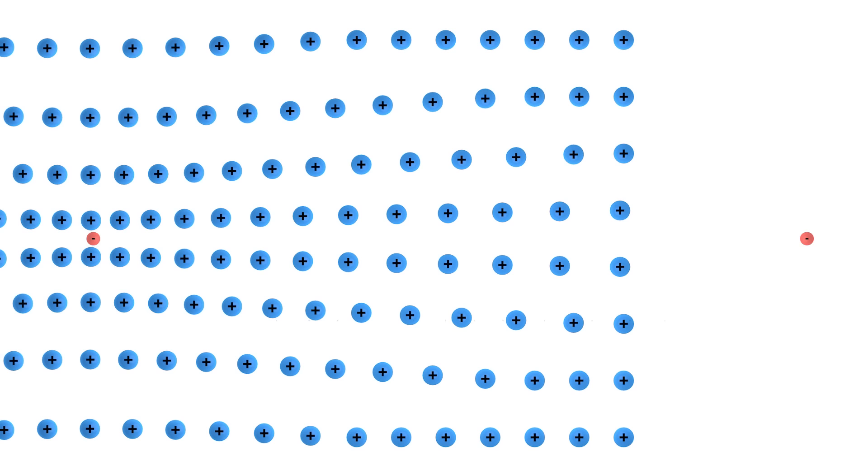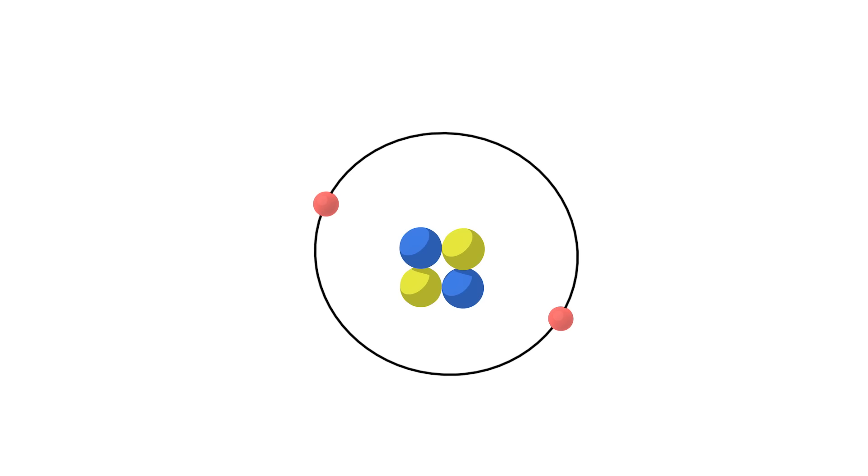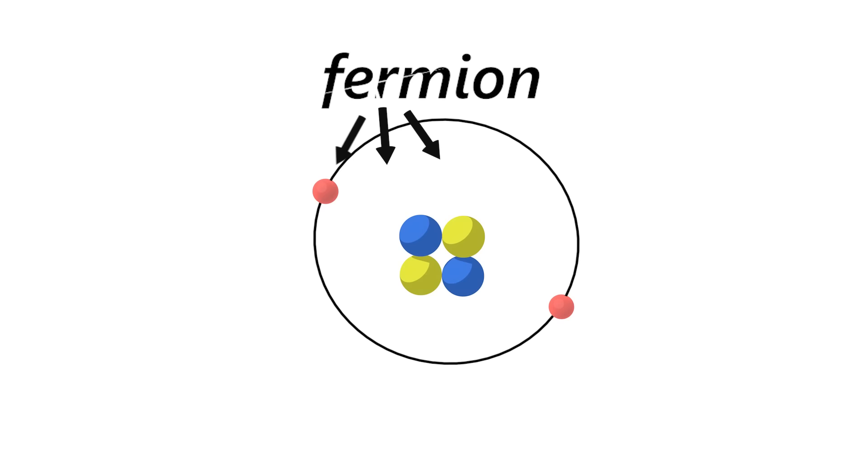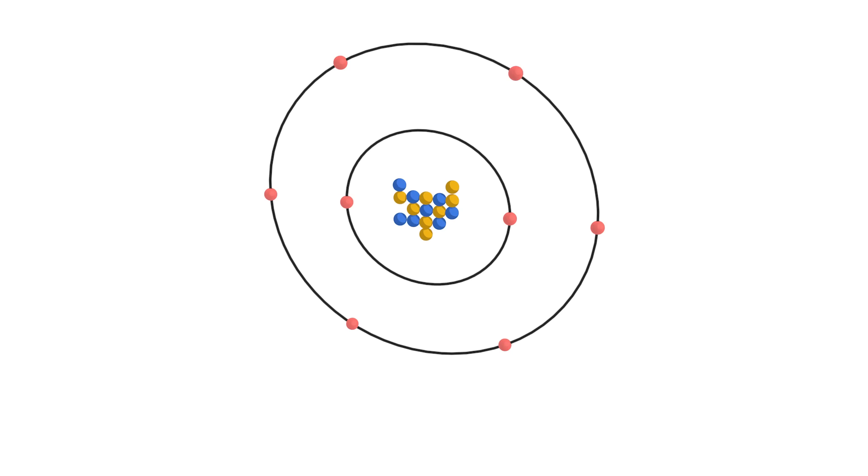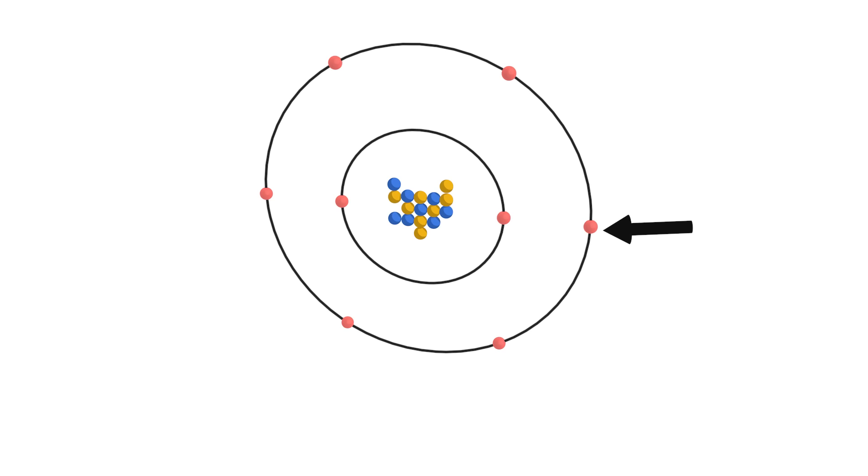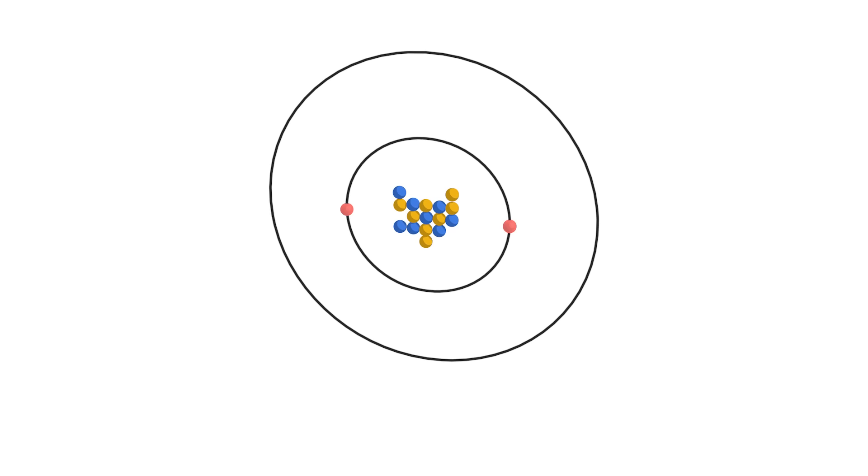When two electrons go into a Cooper pair something interesting happens. Protons, neutrons and electrons are usually what's called a fermion particle. There's another type of particle called the boson. A photon is a boson. I'm not going into details about this but being a fermion like the electron means that no two particles can be in the same state. That's why we see atoms like this. We have fermions electrons orbiting the nucleus. If there were bosons instead they could all go into the same state. So they would all clump into the ground state and no chemical reaction could occur.